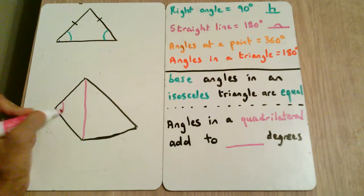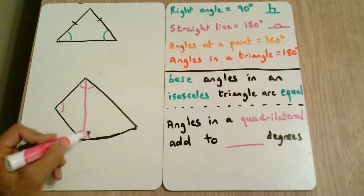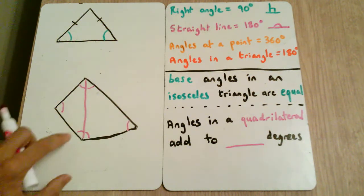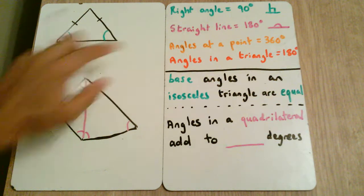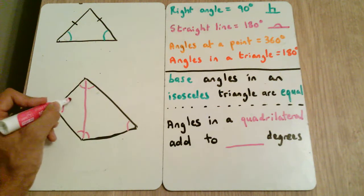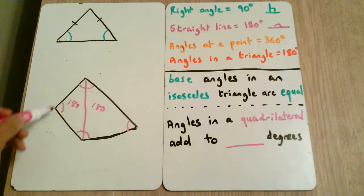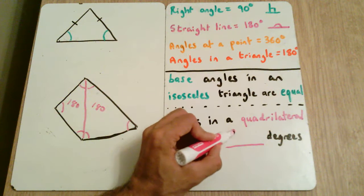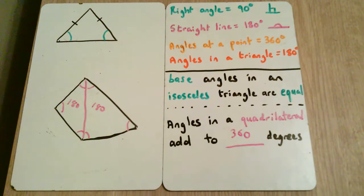The angles in these two triangles are one, two, three, four, five, six. We know that these three angles are going to add to 180, and these three angles are also going to add to 180. So these angles add to 180 and these angles add to 180 — that means all of these edge angles add to 360 degrees. And this is the case for any quadrilateral.